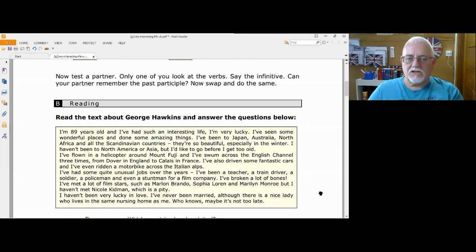Let's just take the questions out of the equation for a minute because it may distract them. Anyway, George Hawkins. I'm 89 years old and I've had such an interesting life. I'm very lucky. I've seen some wonderful places and done some amazing things. I've been to Japan, Australia, North Africa and all the Scandinavian countries. They're so beautiful, especially in the winter. I haven't been to North America or Asia, but I'd like to go before I get too old.